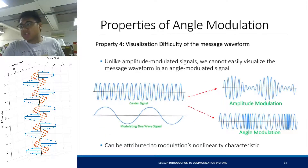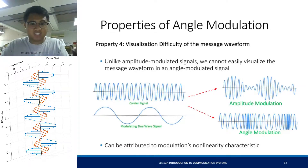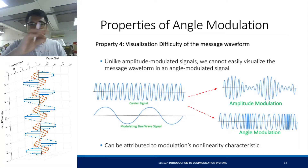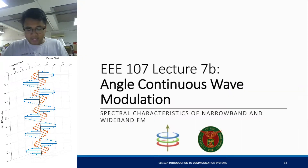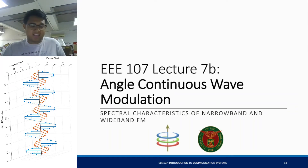Property 4 is the difficulty of visualization. You can't easily see the message signal's shape from an angle modulation scheme. If you compare amplitude modulation, you can see the shape of the message signal, but for FM we cannot — we can only see a variation in the zero crossings. This can be attributed to the nonlinearity of the modulation. That is the basics of angle continuous wave modulation. If you have any questions, do not hesitate to leave a comment. Thank you for listening, see you next meeting.